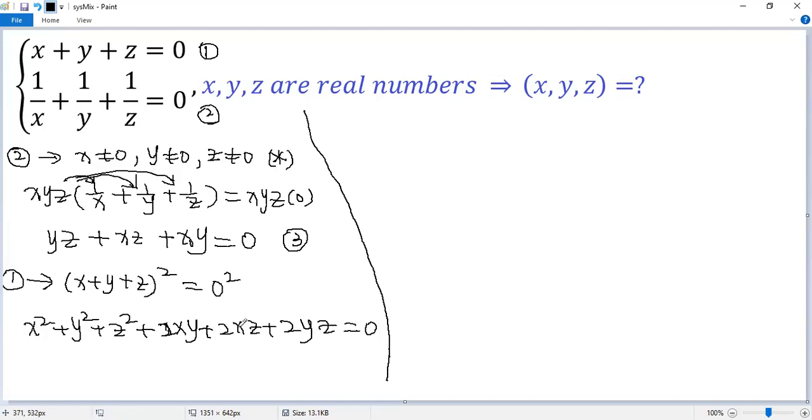We can manipulate this equation. So x squared plus y squared plus z squared, we can take the common factor 2 out. So we get 2 times xy plus xz plus yz equals 0.